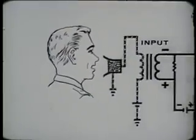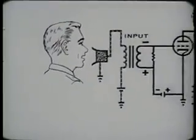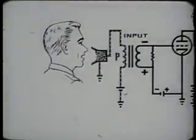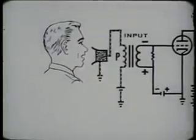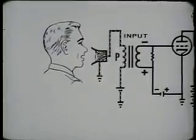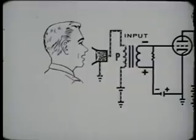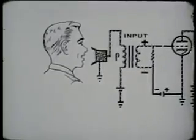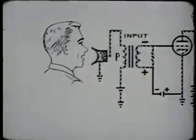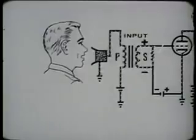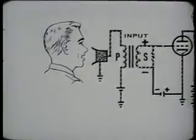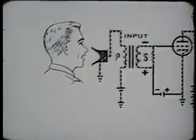The changing current, in passing through the primary of a transformer, sets up a changing magnetic field which induces a voltage into the secondary. This electrical energy must be amplified before it can be reconverted into sound.